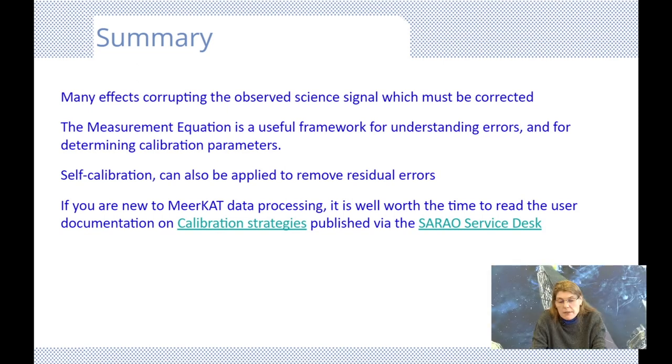So we see that there are many effects including the atmosphere, delay error, and the electronics of the receiver system that will corrupt the signal from our science target. Your science goal will be affected if the observational data cannot be properly calibrated. Standard calibration techniques using bright, simple sources can eliminate most of these effects, and the measurement equation is a useful framework for understanding errors and for determining calibration parameters.